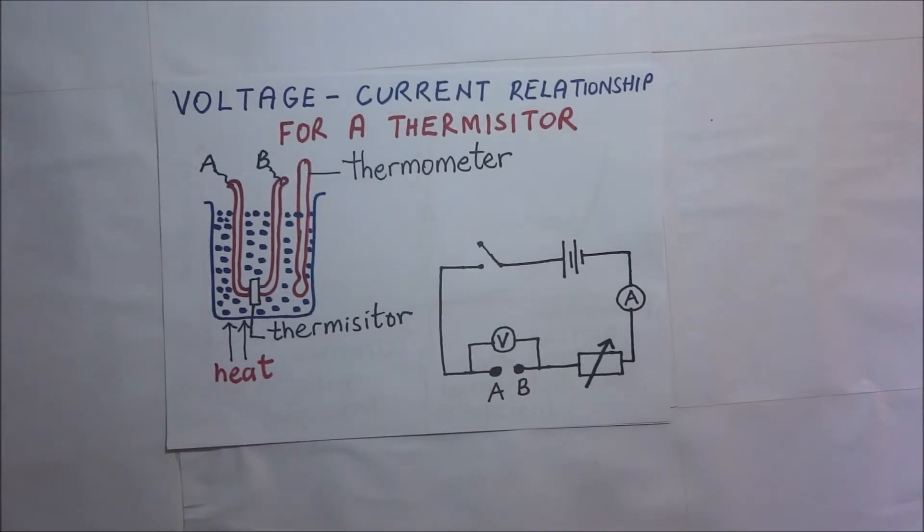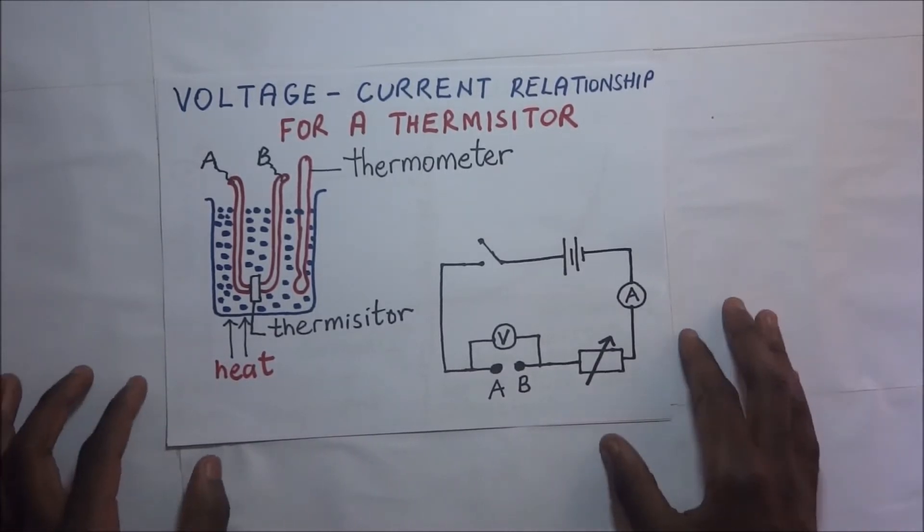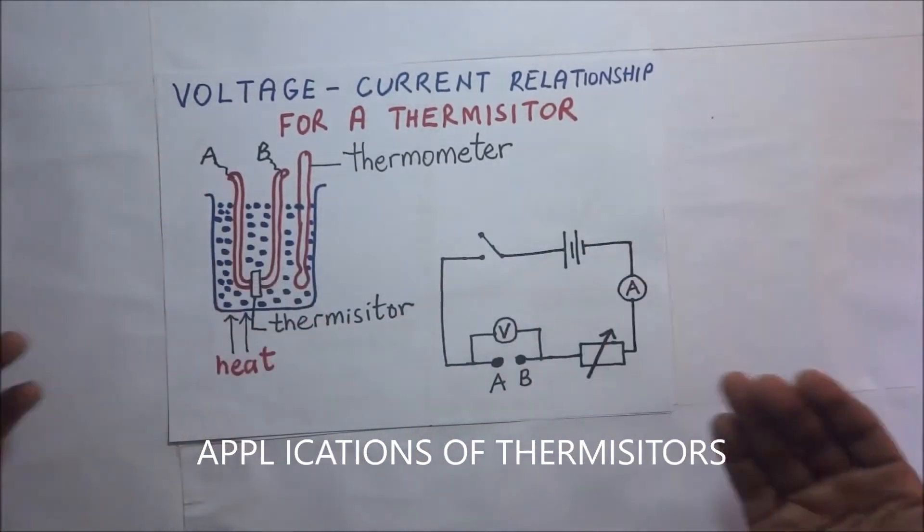We also have thermistors which have their resistance reducing with increasing temperature. Such thermistors whose resistance reduces with increasing temperature have what we call a negative temperature coefficient of resistance. What are thermistors used for before we dive deep into this voltage-current relationship?